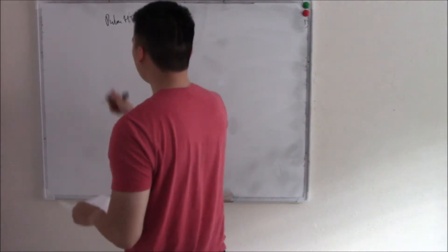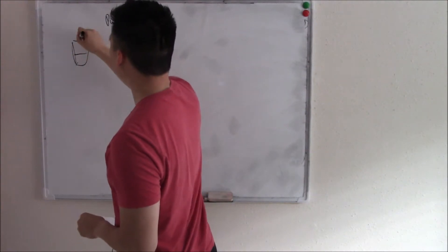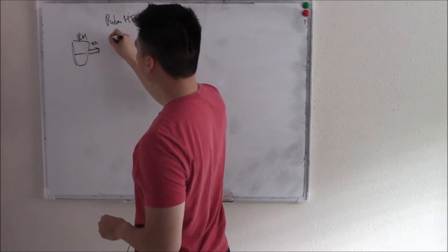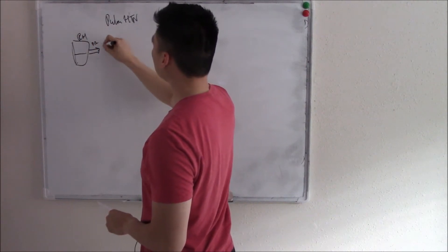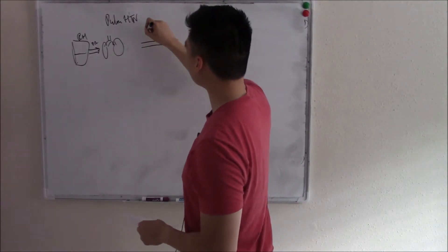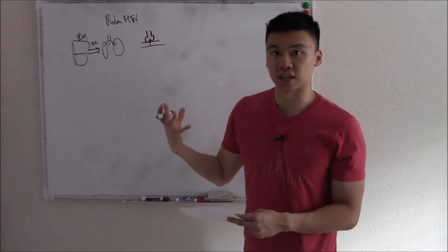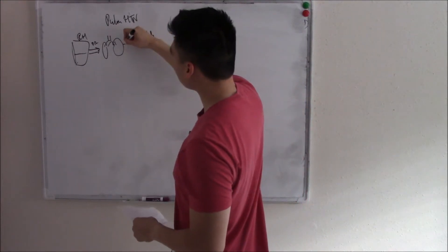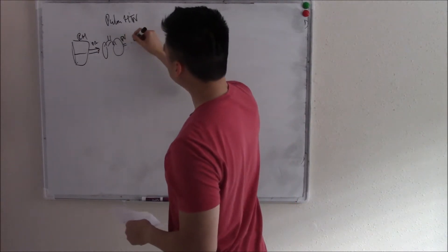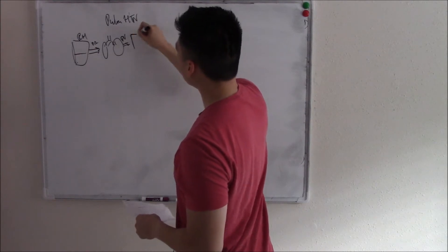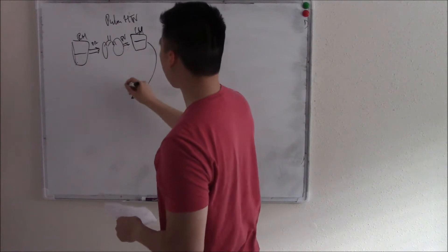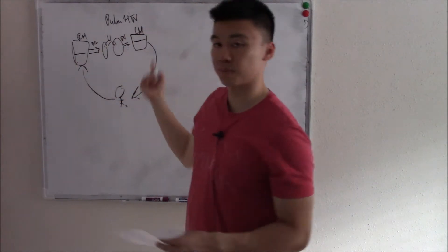Let's just draw this out. You have your right heart, and that pumps deoxygenated blood via your pulmonary artery to your lungs. Your pulmonary arteries will branch out and eventually become capillaries, and that goes to your alveoli and goes through gas exchange. After it gets oxygenated, it goes via your pulmonary vein into your left heart. Your left heart will pump that now oxygenated blood out to your body, and the cycle repeats itself.